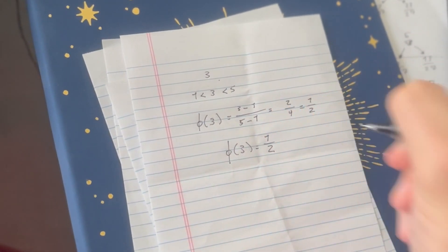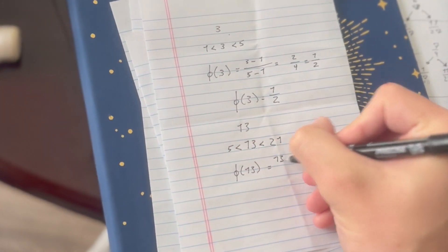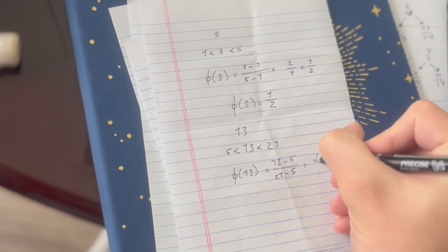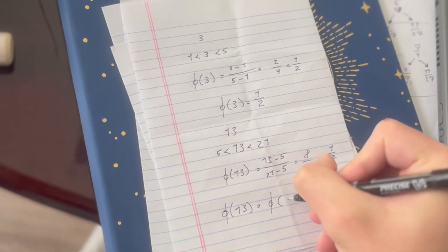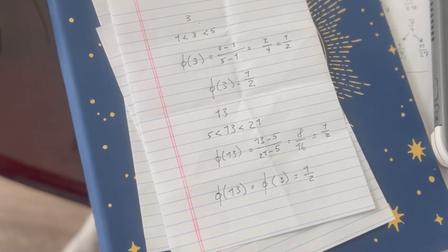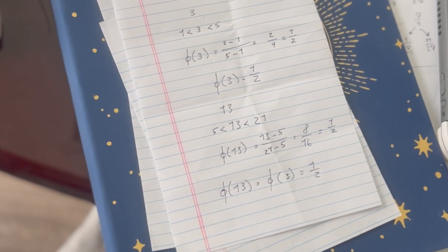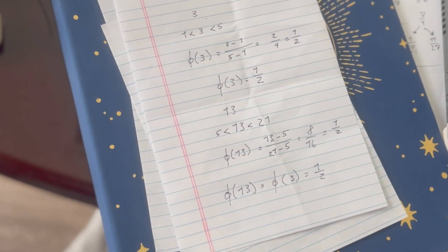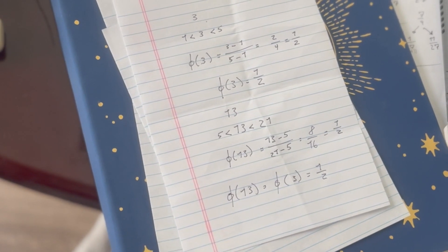Which just seems unimportant until you try it on another number like 13. 13 minus 5 is the top, 13 minus the lower number, but then the number above that is 21 from that set. So you do 21 minus 5 on the bottom, and then you get 1 half for that fraction as well. That's crazy. And the reason that's crazy is that because both of those numbers, 3 and 13, gave that fraction 1 half. That means that they take the same number of recursive steps to get to 1.